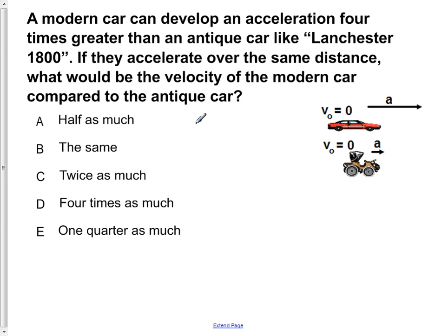A modern car can develop an acceleration four times greater than an antique car like Lanchester 1800. If they accelerate over the same distance, what would be the velocity of the modern car compared to the antique car?